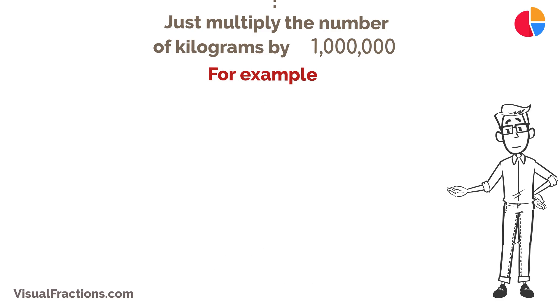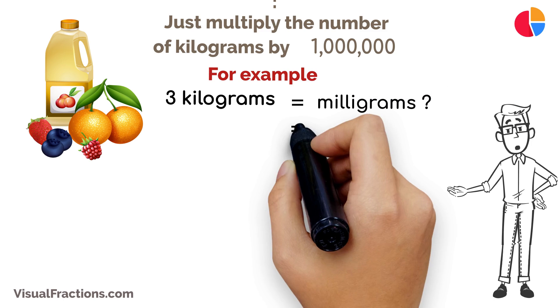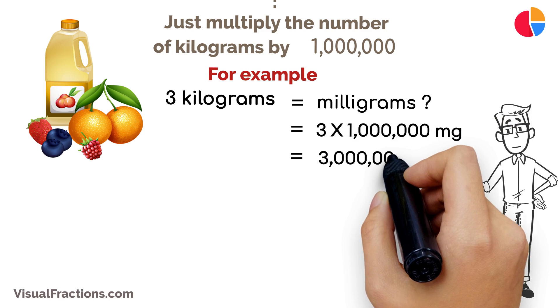For example, if you have an item that weighs three kilograms and you need to know its weight in milligrams, you multiply three kilograms by one million. This gives you a total of three million milligrams.